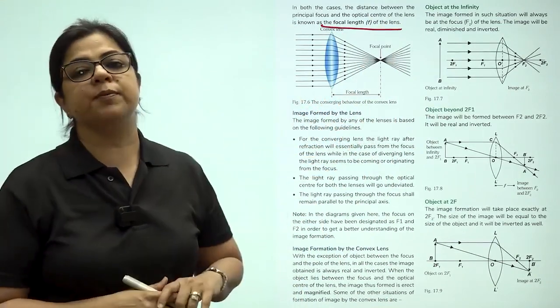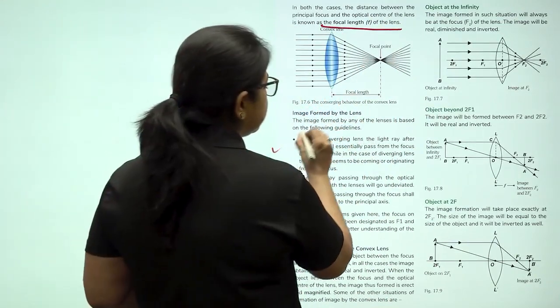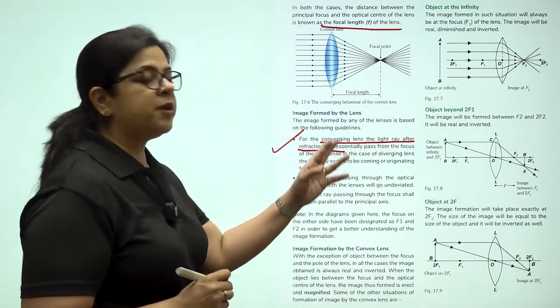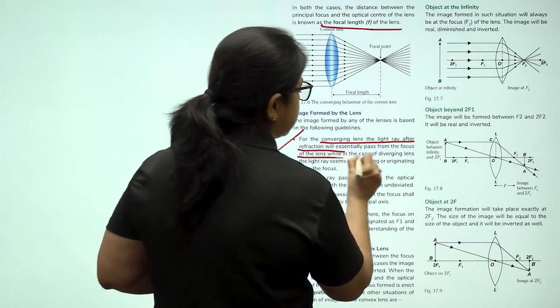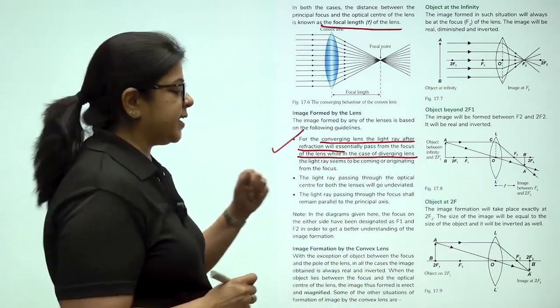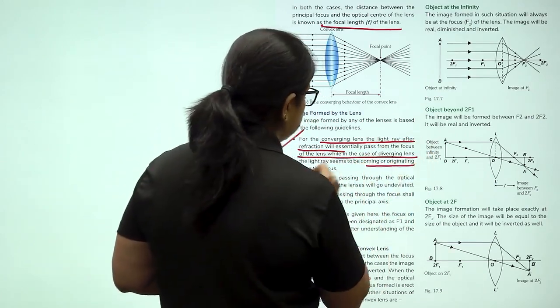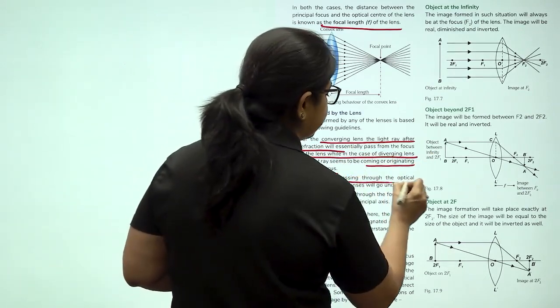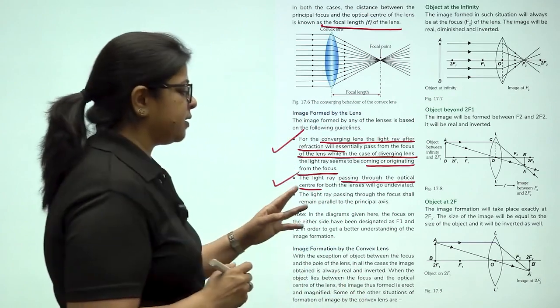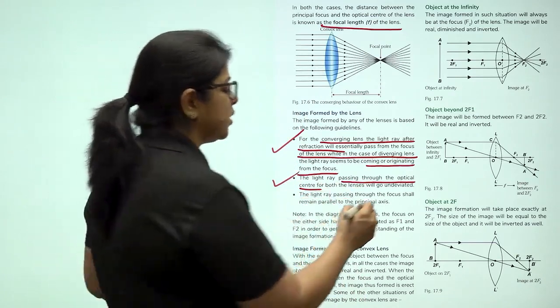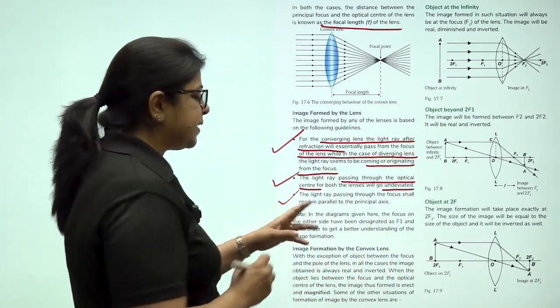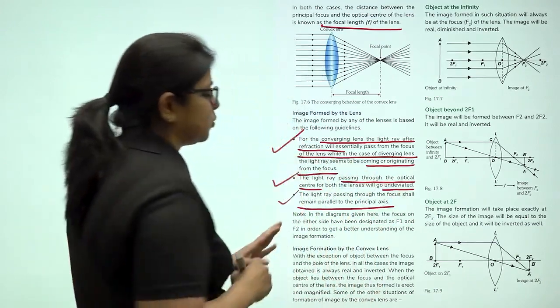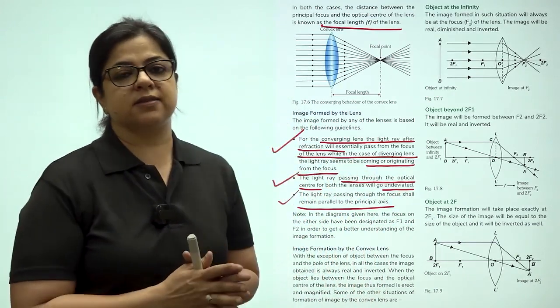How are the images that are formed by a lens? For converging lenses, the light ray after refraction will pass from the focus and in case of diverging lenses, it seems to be originating from the focus. Second important thing, the light ray passing through the optical center for both the lenses will go undeviated and the light ray passing through the focus shall remain parallel to the principal axis.